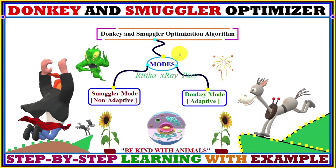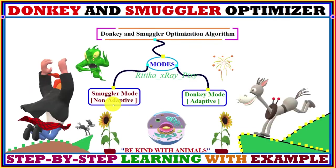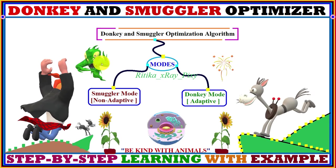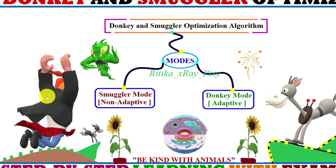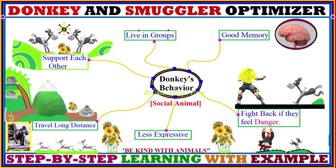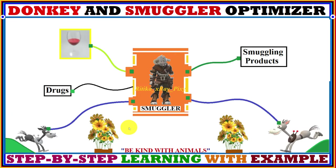This algorithm has two important modes: donkey mode, which is the adaptive mode, and smuggler mode, which is the non-adaptive mode. Now we will understand the smuggler's role in this algorithm. Donkeys have very good memory, love to learn, can remember familiar routes, and can travel long distances without the owner's guidance on familiar routes.